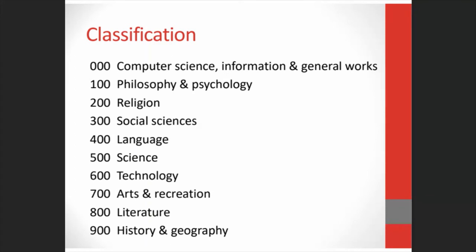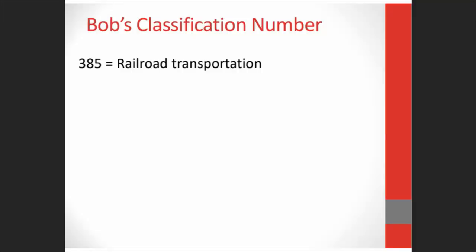How did Dewey want to classify the entire world of knowledge? He started with the highest levels of knowledge and broke them down into 10 main classes, and each of these 10 main classes can be broken down into 10 more classes, then 10 more, and so on. We're going to take a brief look at Bob's call number. For Bob's classification number, we start in the social sciences in the 380s for commerce, communication, and transportation. 385 is railroad transportation, so we're getting very close to Bob's number — and if this were just a book about railroads in general, we could just stop right here.